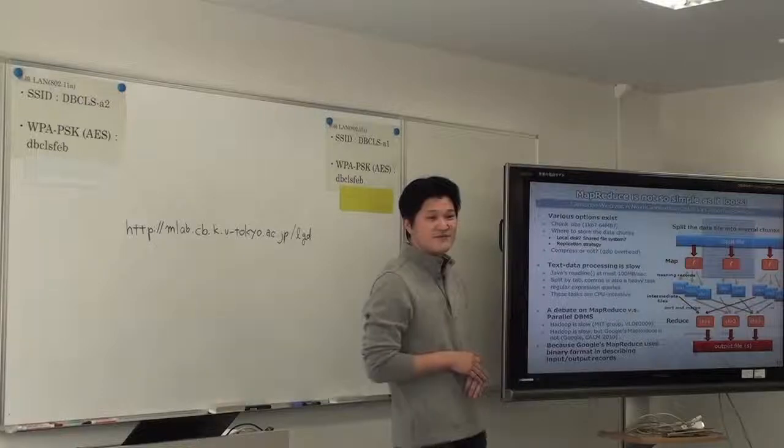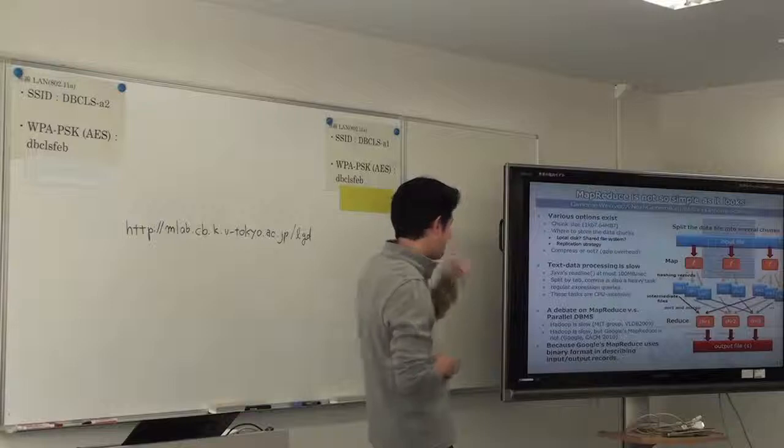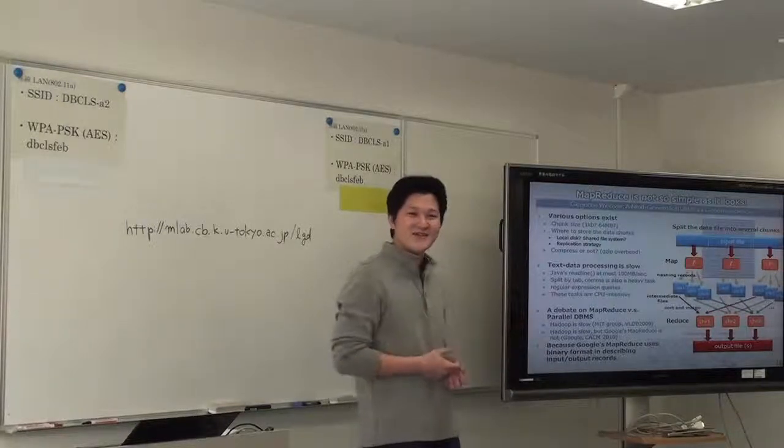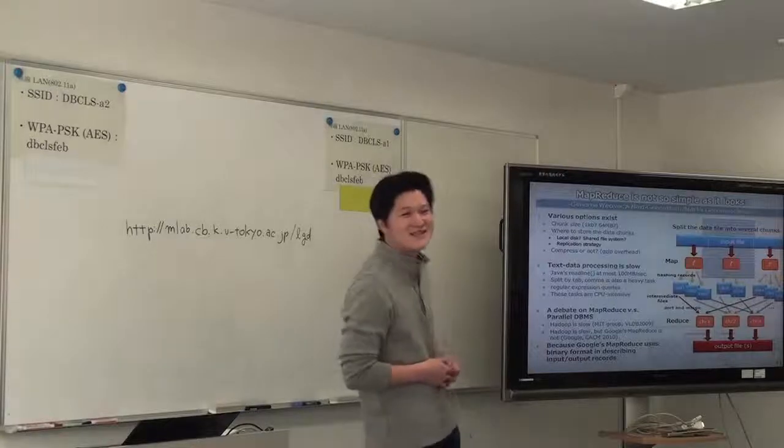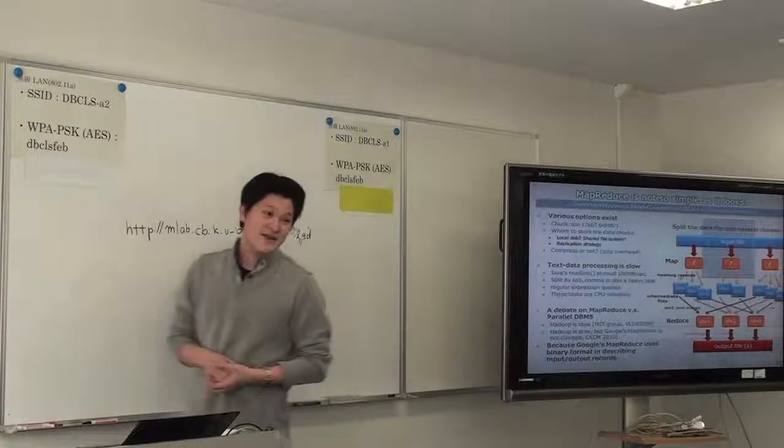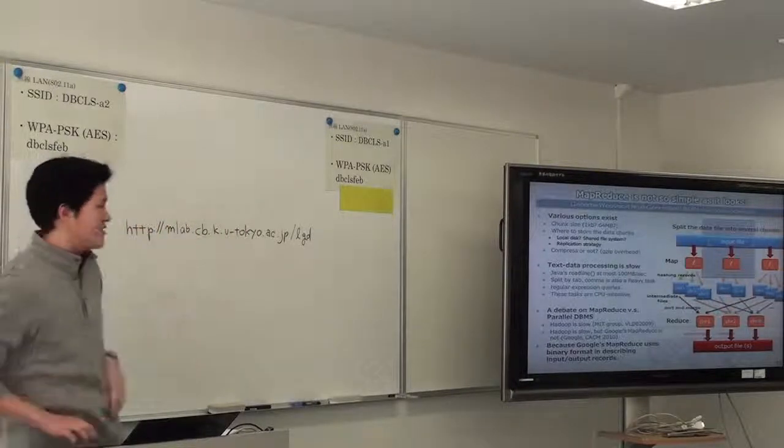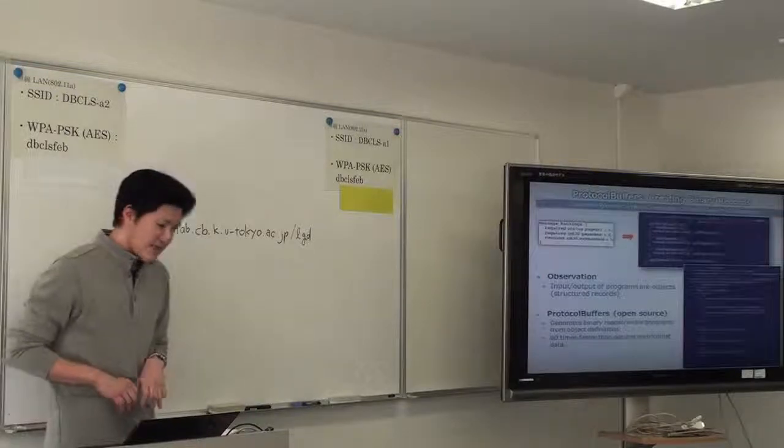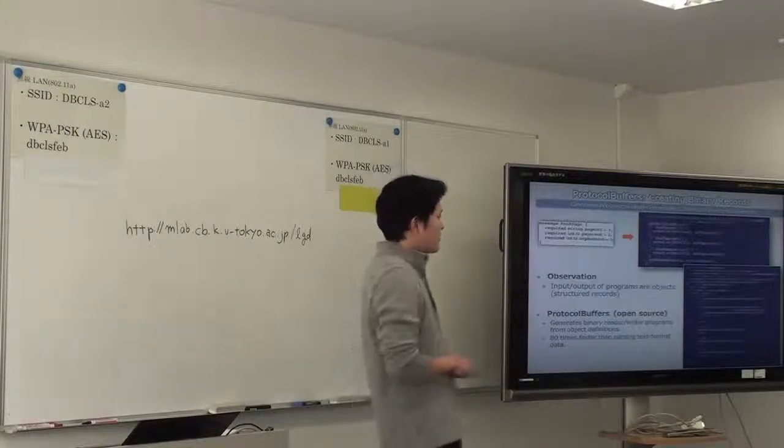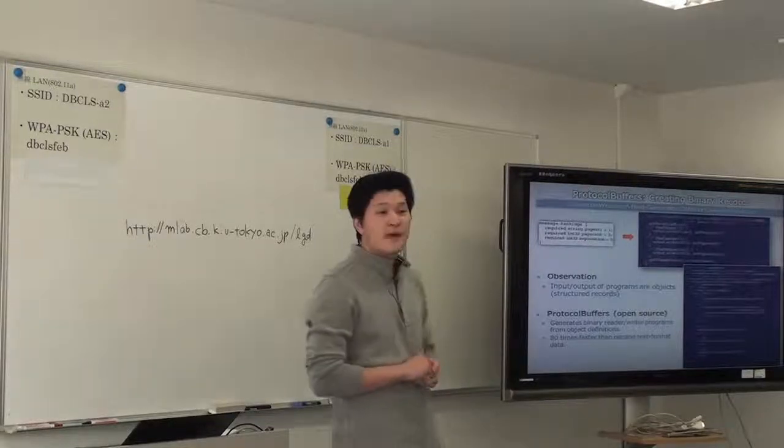Because of this, there was a debate on which is better, MapReduce or using some parallel database management system. And some database folks argue Hadoop is too slow. It has to process data at this speed. But Google created a counterpart. Hadoop is indeed slow. But Google's one is not. Because Google's MapReduce uses binary format for processing text input and output records.